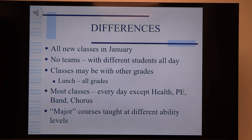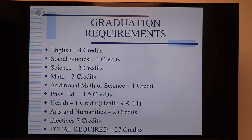Graduation requirements — this is not something you have to memorize; it's in the program of studies we gave the students. All students are required to have four English classes. All students outside of BCTC career tech students need four credits of social studies. Students need three science credits and three math credits, plus one more credit on top of that. Many students take more than the minimum — at least four science credits, at least four math credits, and some go beyond that. That is just the minimum.